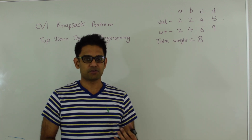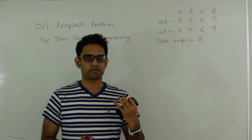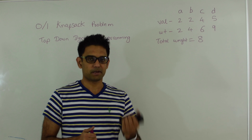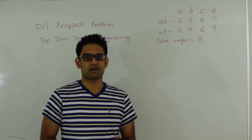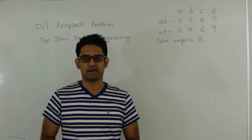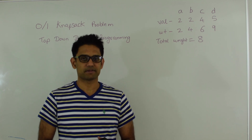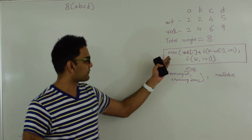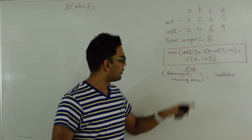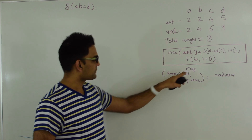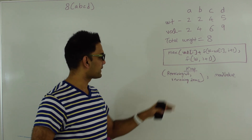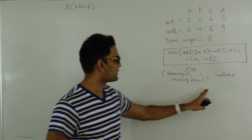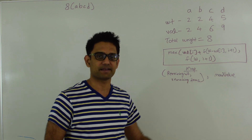When you pick an item, the value you get is the value of that item plus whatever value you can get from the remaining items and remaining weight. Or you don't pick an item and then you get the value from the remaining items and current weight. We also have a map for memoization where the key is the remaining weight and remaining count of items, and the value is the maximum value we can get for that key.